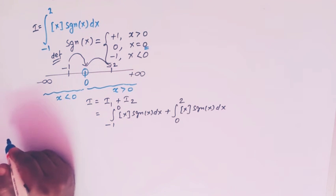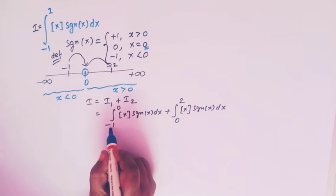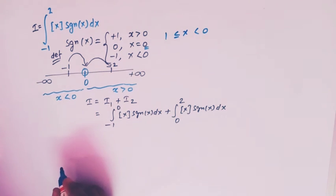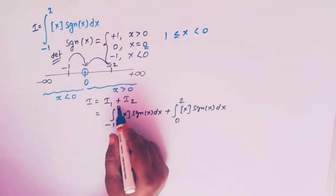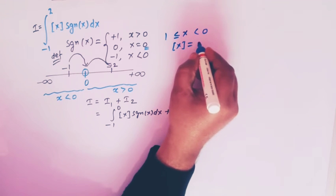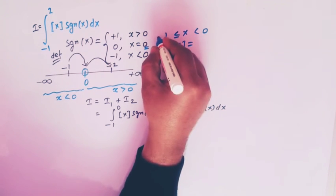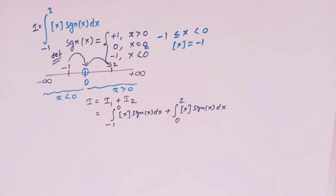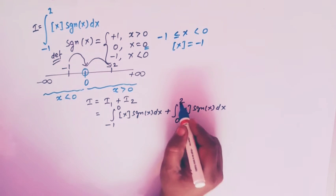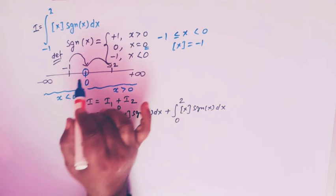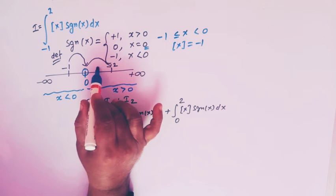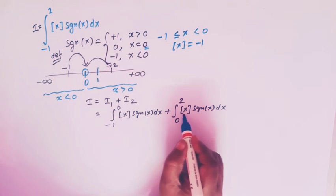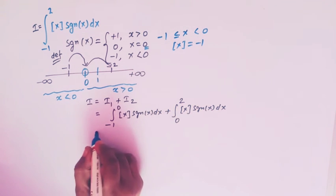Now let us apply the definition of the greatest integer function. In I1, x varies from minus one to zero, so the value of the greatest integer function of x equals minus one. For I2, the limits are from zero to two, and there is an integer 1 which lies between 0 and 2, so we split this integral further into two integrals.